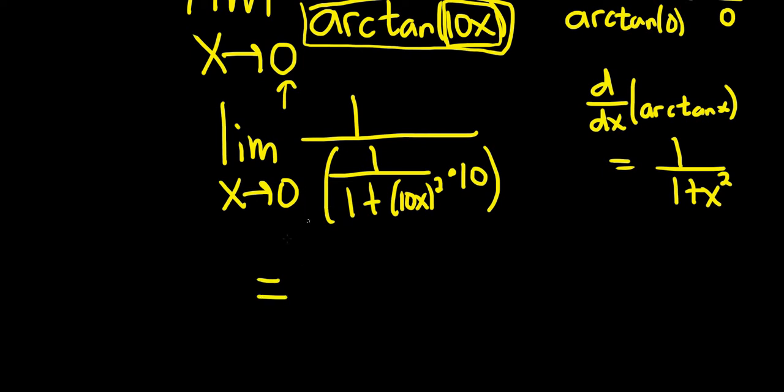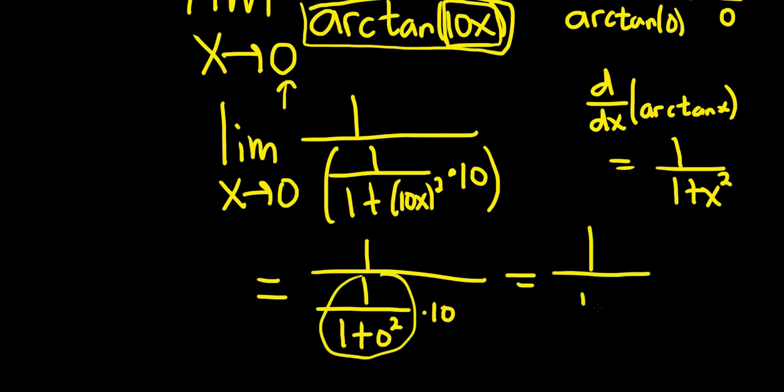So when you're plugging in the numbers, that's when you stop writing the limit sign. So we drop the limit sign and we have one over. This will be one over one plus zero squared and then times ten. This is equal to one over, well this is just one, so it's ten times one. So it's just ten. So the answer is one over ten.